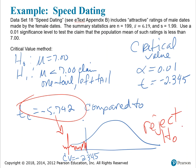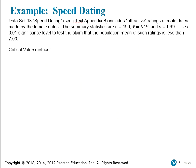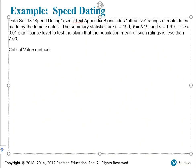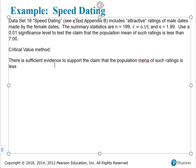If I reject H sub 0, then I accept H sub 1, which means I'm going to support the claim. So the sample evidence does support the claim. Since I rejected H sub 0, there is sufficient evidence to support the claim that the population mean of such ratings is less than 7.00.